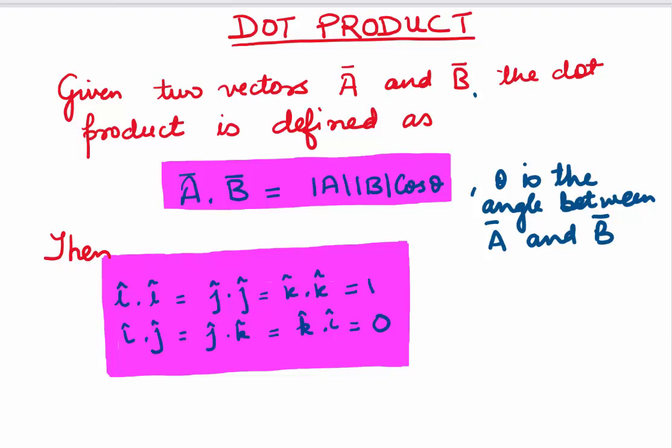Let's look at some results. You are fully aware that i, j, k are three unit vectors in the direction of the axes X, Y, Z. The angle between all of them is 90 degrees: i is at 90 degrees to j, j is at 90 degrees to k, and k is at 90 degrees to i.